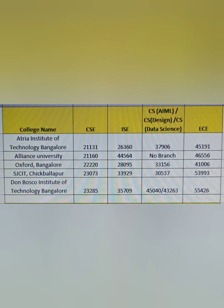Since your option entry cannot be changed in the next round, it's very important that you apply for many options. Going further, for ranks around 21,000: CSE is available at Atria, ISE up to 26,000, ECE up to 45,000. Alliance similarly has CSE at 21,000 and ECE at 46,000. Oxford has CSE at 22,000 and ECE at 41,000. These are quite good colleges — I've made reviews for them. SJC IT Chikkaballapur has CSE closing at 23,000, ISE at 33,000, and ECE at 54,000. Don Bosco Institute of Technology has CSE at 23,000 and ECE up to 55,000.